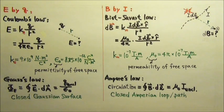The other law we can use is Ampere's law. Ampere's law says this thing called the circulation is the closed integral of B dot dL along a closed Ampere loop or Ampere path. And this equals mu naught times the enclosed current.